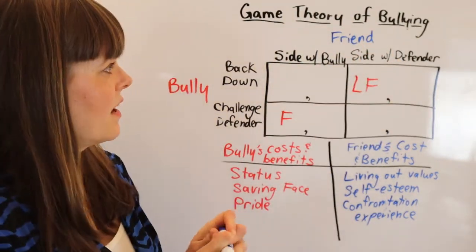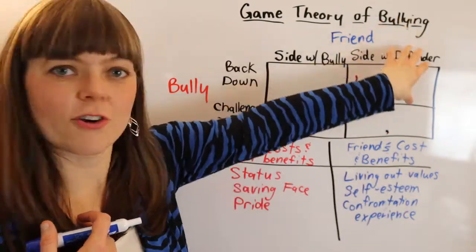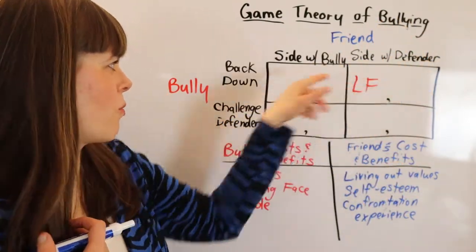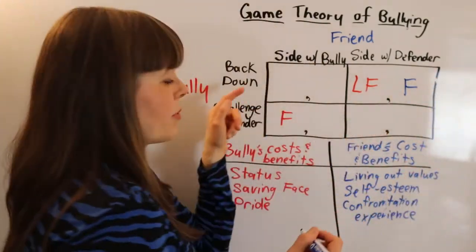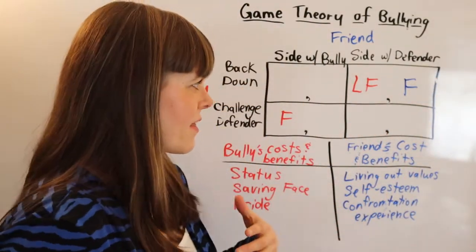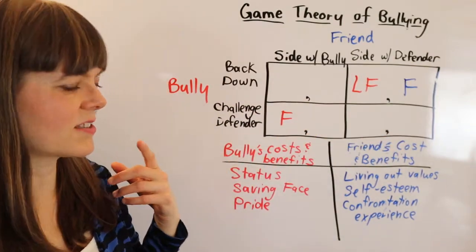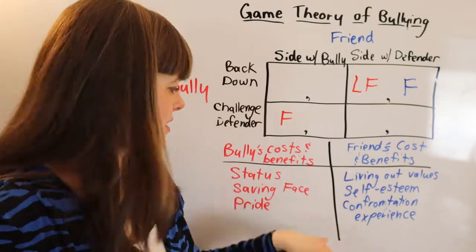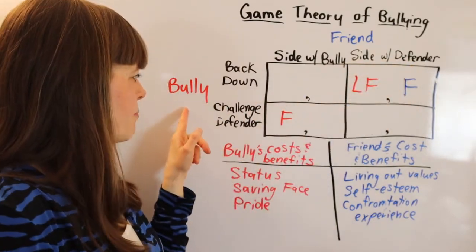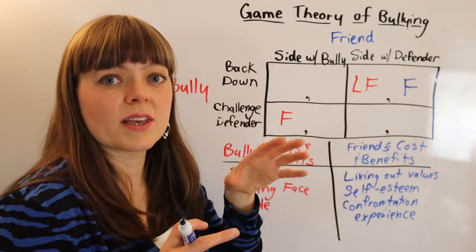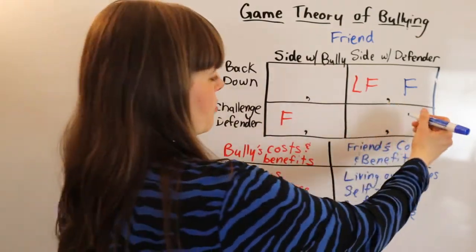For the friend's favorite box: the friend prefers to side with the defender because they know it's right and it gives them self-esteem. Between the bully backing down versus challenging, the friend probably prefers when the bully backs down — no confrontation to deal with. The friend's least favorite box might actually be when they side with the defender but the bully challenges and bullies both the friend and the defender. In that case, based on their choice, they end up getting bullied — that's their least favorite outcome.